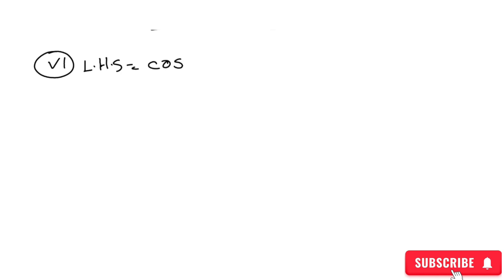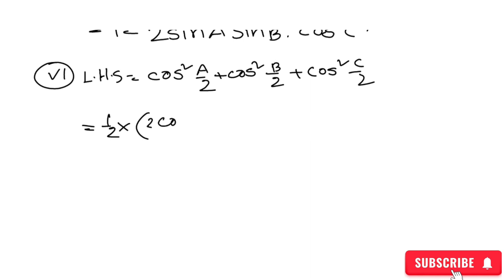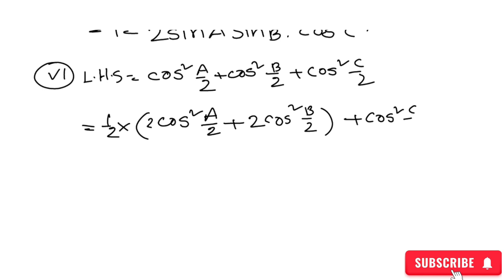Now the second expression: cos²(a/2) plus cos²(b/2) plus cos²(c/2). Using the identity: 2 cos²(x/2) equals 1 plus cos(x), we can write: one-half times (1 plus cos a) plus one-half times (1 plus cos b), plus the term for cos²(c/2).